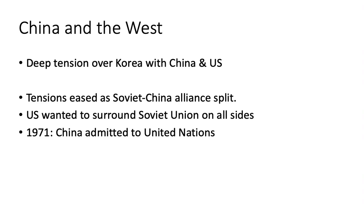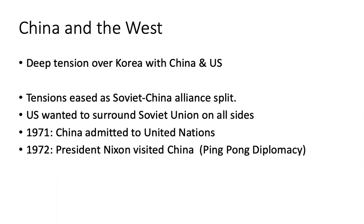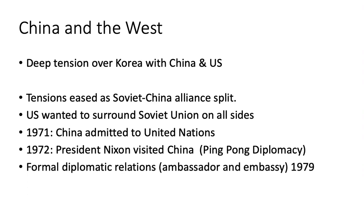China was shortly after added to the UN Security Council, becoming one of its five permanent members with significant power. In 1979, formal diplomatic relations were established — the United States sent an ambassador and created an embassy in China, and China did the same in Washington, D.C. As the Cold War progressed, the United States saw a better relationship with China as a way to limit and weaken the power of the Soviet Union, continuing the containment strategy started under Truman.